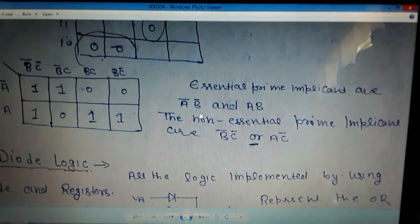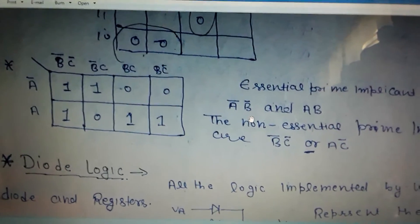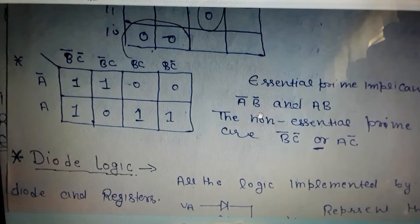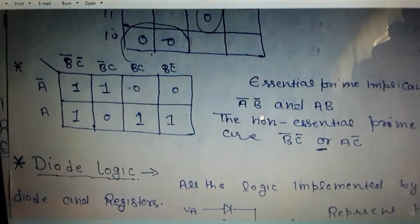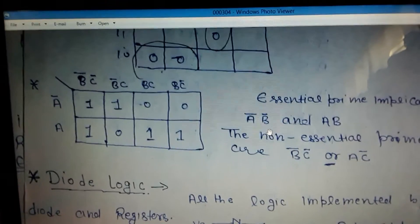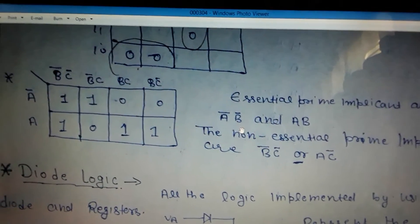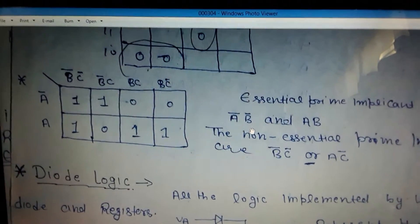So let us discuss all these things. Here you are seeing on my computer screen my K-map example. In this example, there are essential prime implicants A̅B̅ and AB.